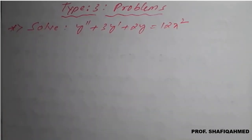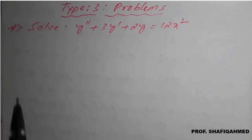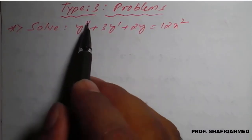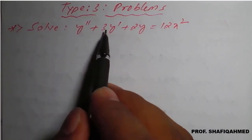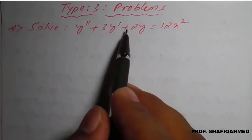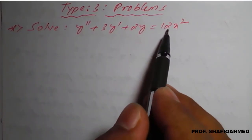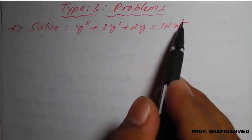Hello everyone. In this lecture, we will see a problem on type 3. The problem is: solve y double dash plus 3y dash plus 2y equal to 12x square.